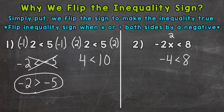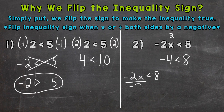Now let's solve this one-step inequality to get all the solutions for X. So rewriting: negative two X is less than eight. We need to isolate X, so we divide by negative two on both sides to cancel out the negative two. So X is now isolated and we have X is less than negative four — not going to flip the sign here. So X is less than negative four.